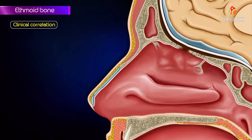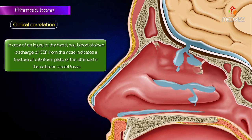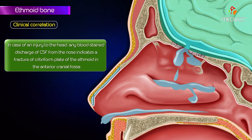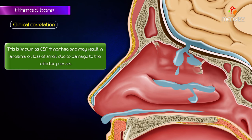In case of injury to the head, any blood-stained discharge or CSF from the nose indicates a fracture of the cribriform plate of the ethmoid bone in the anterior cranial fossa. This is known as CSF rhinorrhea, and may result in anosmia, or loss of smell, due to damage to the olfactory nerves.